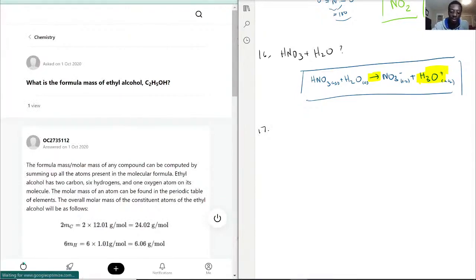What is the formula mass, which is the molecular mass, for ethyl alcohol? They were nice enough to give us the formula C2H5OH, but they were not that nice.